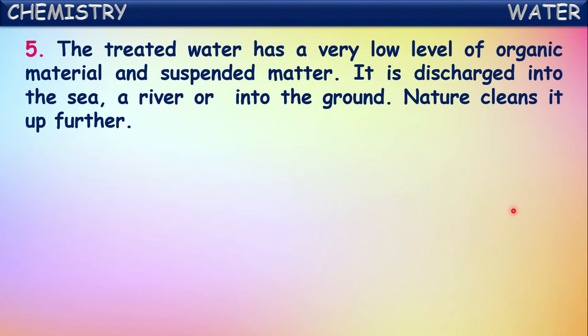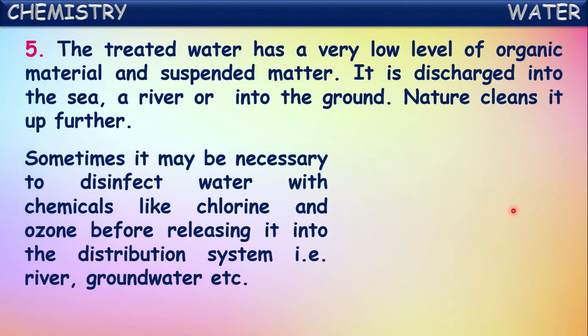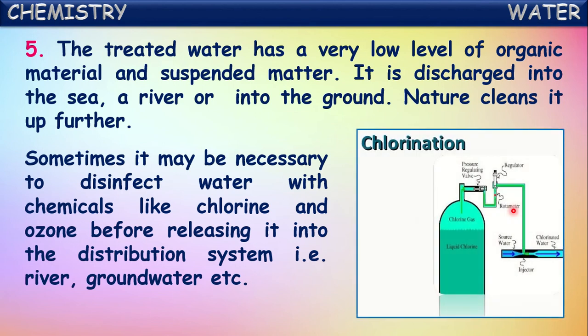The treated water has a very low level of organic material and suspended matter. It is discharged into the sea, a river, or into the ground to increase the groundwater level, and nature cleans it further. Sometimes it may be necessary to disinfect water with chemicals like chlorine and ozone before releasing it to the distribution system.